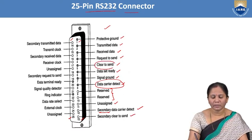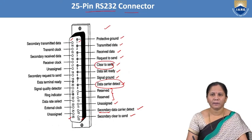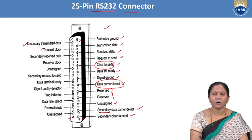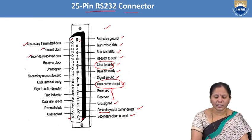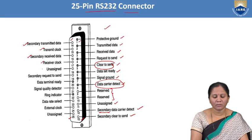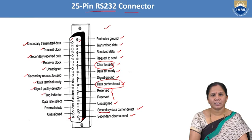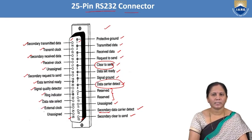Other signals in the 25-pin connector include secondary transmitted data, transmit clock, secondary received data, receiver clock, secondary request to send, data terminal ready, signal quality detector, ring indicator, data rate select, and external clock.